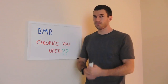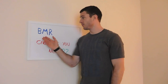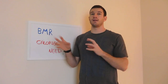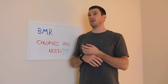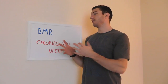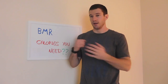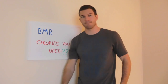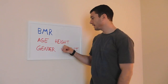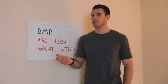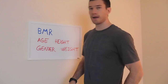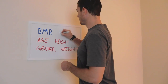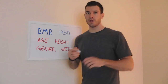The first thing we need to do is calculate your BMR, which stands for basal metabolic rate. This is the amount of calories you would need per day to survive — pretty much if you just did nothing, if you laid in bed all day, this number would be the total calories you'd need. All you need to know is four things: your age, your height, your gender, and your weight. There's a BMR calculator link in the description — you put all this info in and get a number. I put my info in and got 1,930.